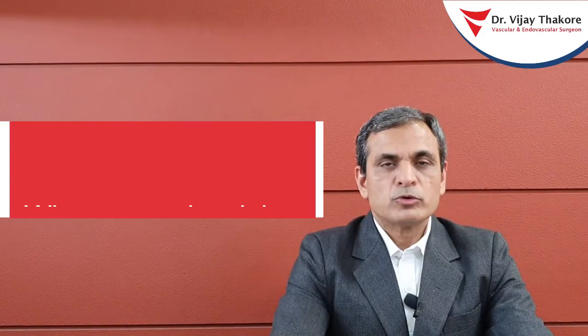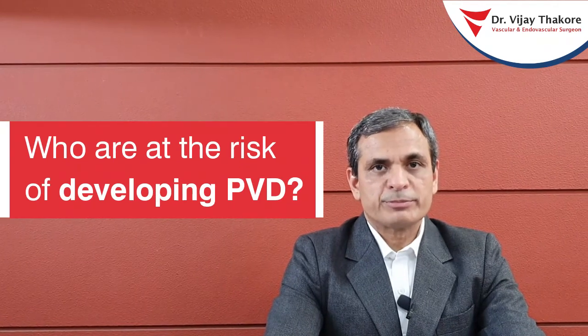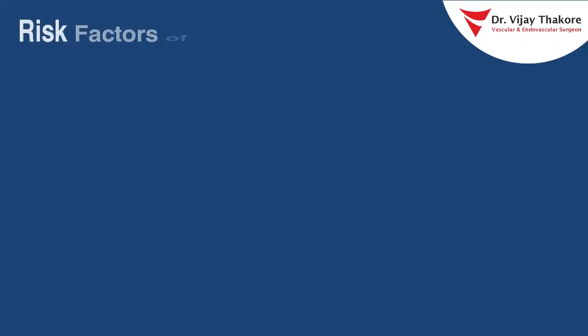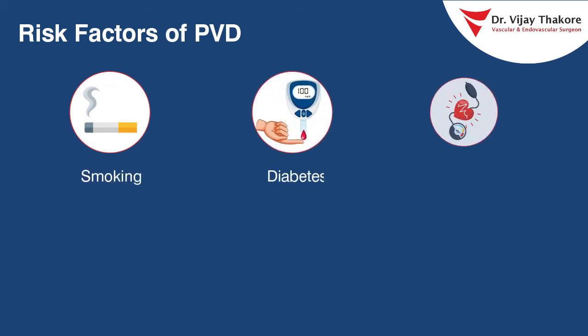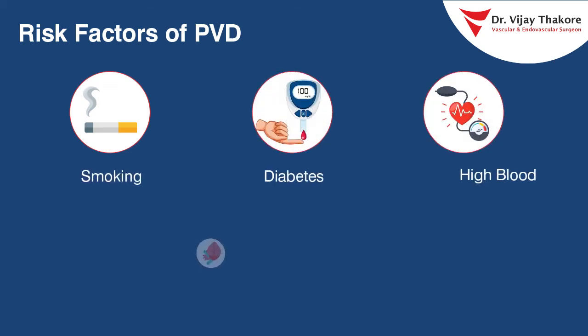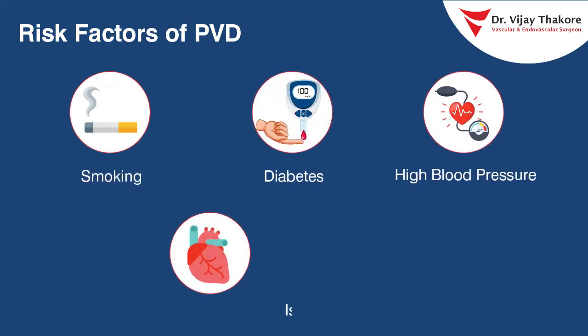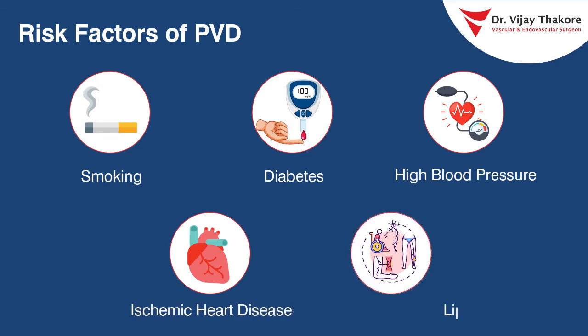Who is at risk of developing peripheral vascular disease? People who smoke, who are diabetic, hypertensive, have ischemic heart disease, or people with lipid abnormalities are more prone to developing peripheral vascular disease.